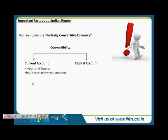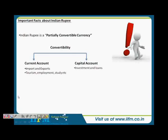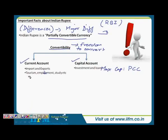The second thing in the current account is tourism, employment, study, etc. This is slightly different because there may be a maximum cap, but again it is largely full convertibility. There might be some rules and regulations from RBI regarding convertibility, but overall we can say that for the current account, the convertibility is almost full.